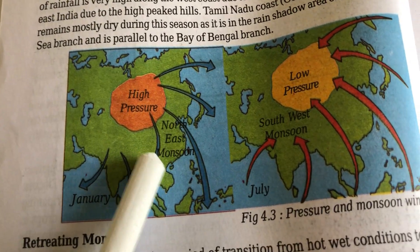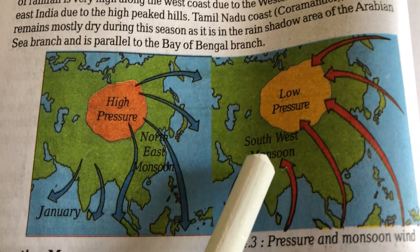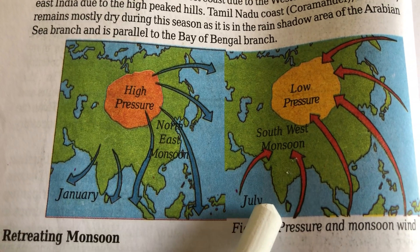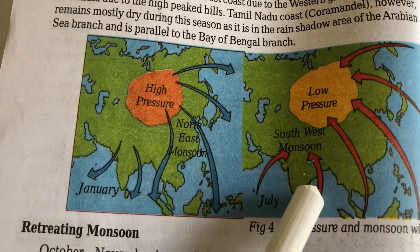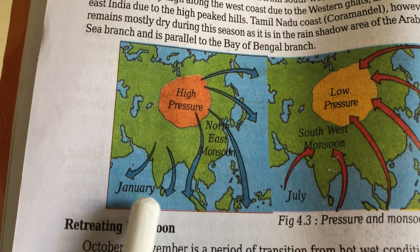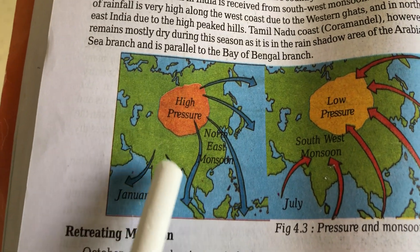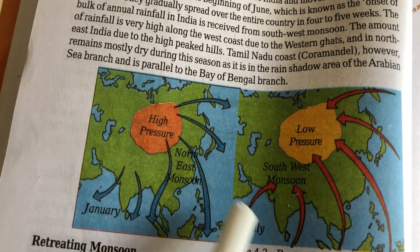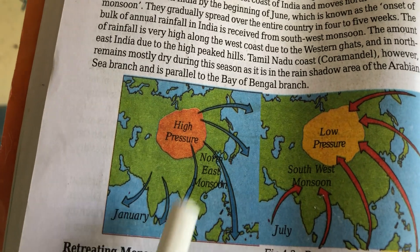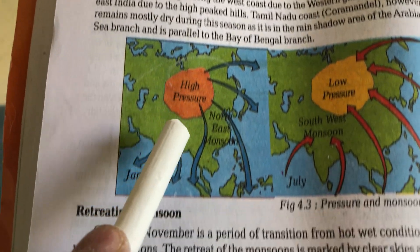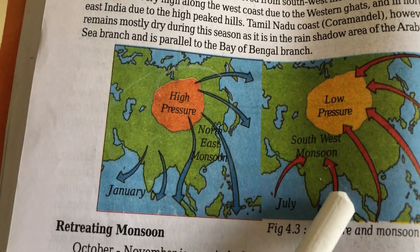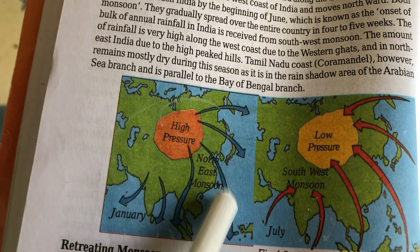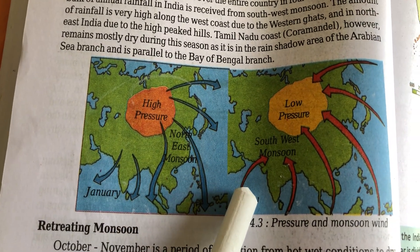If you see the diagram: high pressure is in the North East monsoon, and low pressure is in the South West monsoon. This high pressure is in January and low pressure is in July. July is the rainy season, and January is the winter season. So January has high pressure and July has low pressure — advancing monsoon season.